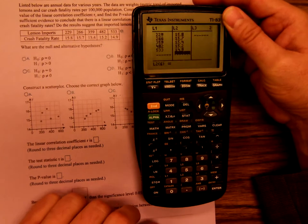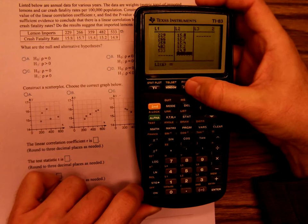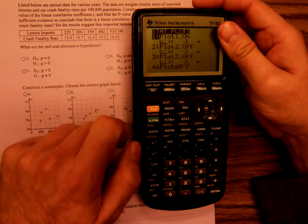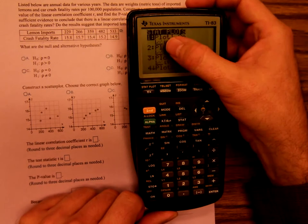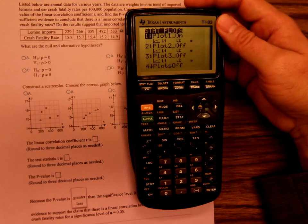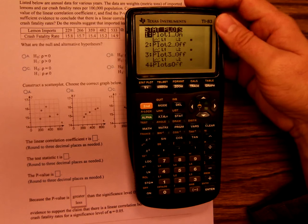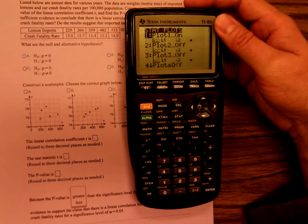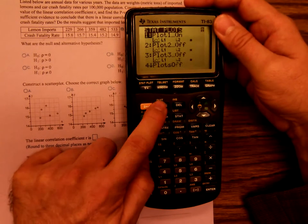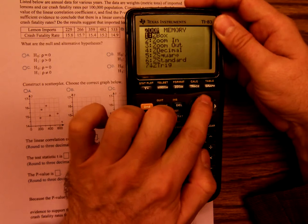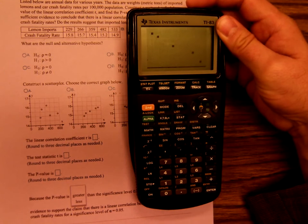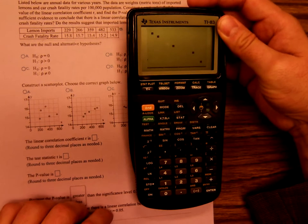Now to graph these. Let me see. Second, Stat plot. Okay, so plot one is on and it's a scatter plot. Plot two, three, four, those are off. So yes, it's set up correctly. Now I need to do the graph. So let me get out of that. Zoom, and then scan down until you get to zoom stat. Enter. Okay, so there's the scatter plot.